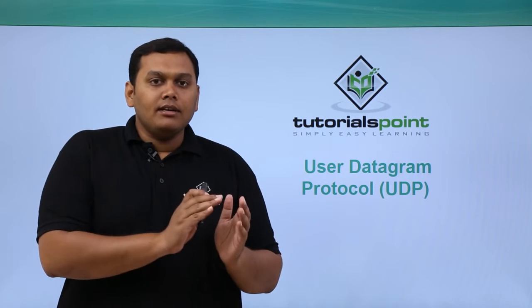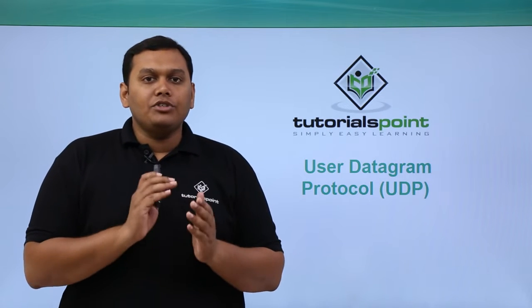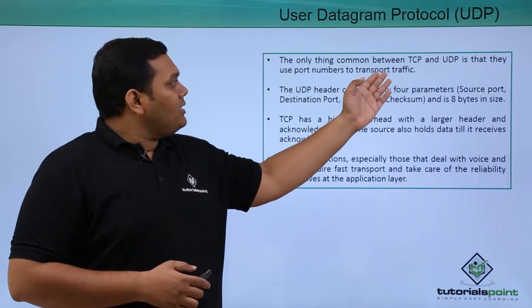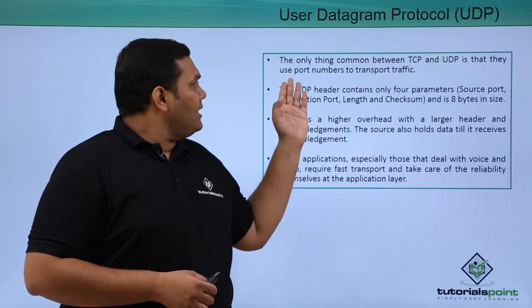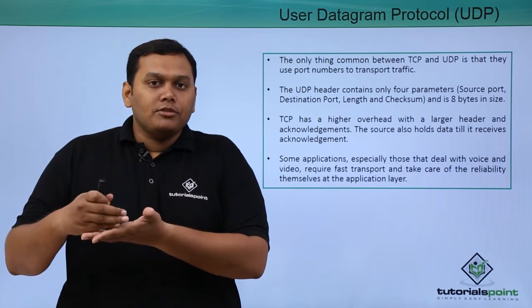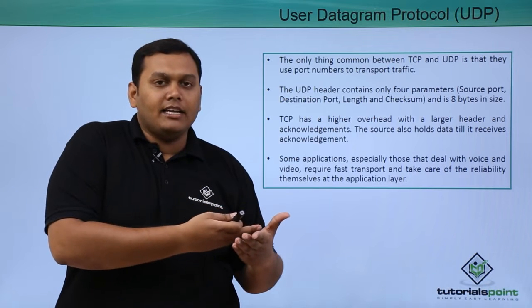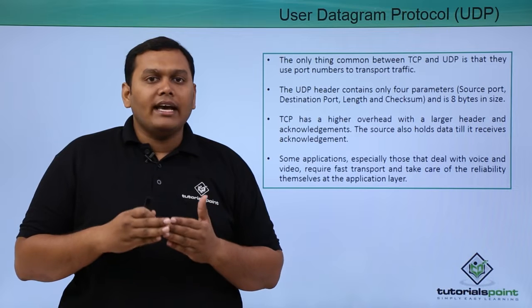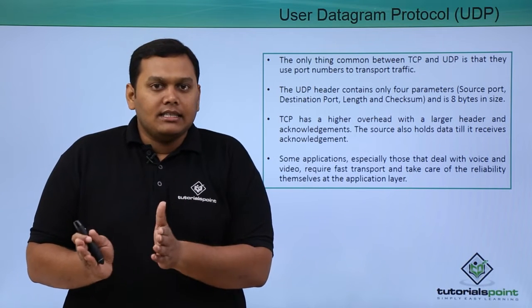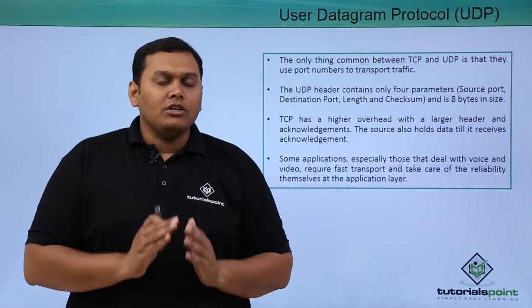UDP is very simple and it does only simple functions when compared with TCP, which does complex functions in the transport layer. The only thing common between TCP and UDP is that they use port numbers to transfer the data. TCP performs much more complex things like reliability, reliable data delivery, flow control, and error handling. But UDP does not do these three functions and only performs multiplexing and demultiplexing.